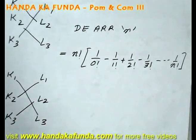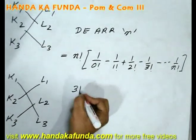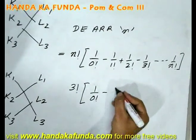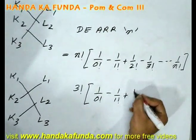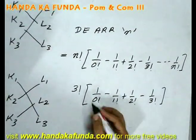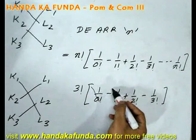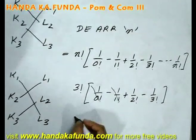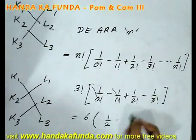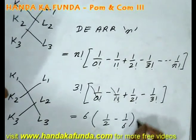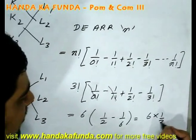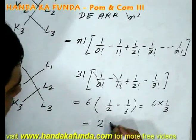Suppose instead of n you had 3 here, what would have you got? It would have been 3 factorial, 1 by 0 factorial minus 1 by 1 factorial plus 1 by 2 factorial minus 1 by 3 factorial. 1 by 0 factorial is 1, 1 by 1 factorial is 1 that will get cancelled out. This would have been 6 times, 1 by 2 factorial is half, 1 by 3 factorial is 1 by 6, half minus 1 by 6 would have given you 1 third or you would have got the answer as 2 ways.